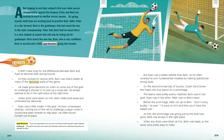Apprehensive: if you are apprehensive, you are worried something bad might happen. Technical: the technical parts of a sport are the basic skills and understandings that are needed to play. But Ryan was a better athlete than Burke, so he often covered his own fundamental mistakes by making spectacular diving saves.